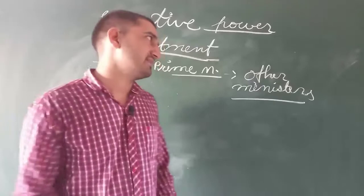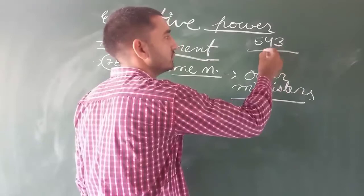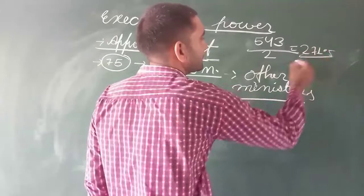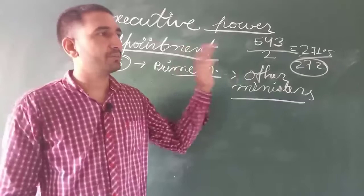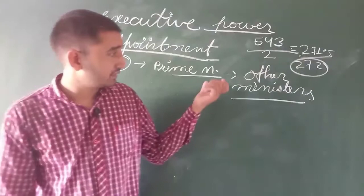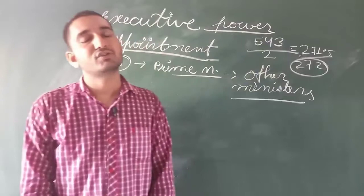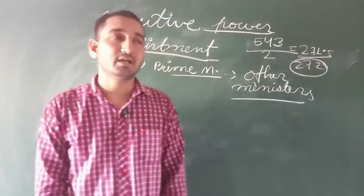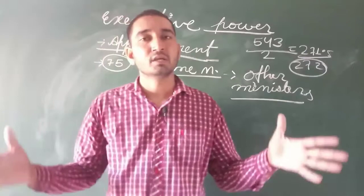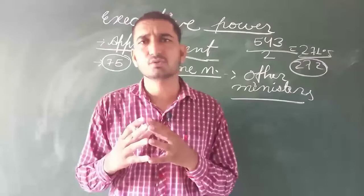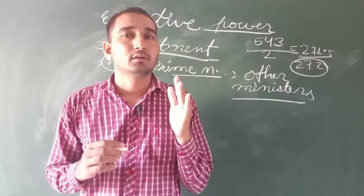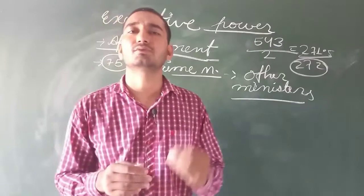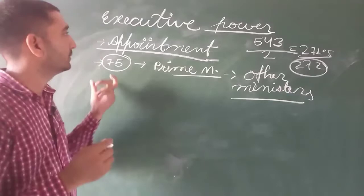In Lok Sabha, the total elected members are 543. Dividing by 2 gives 271.5, so approximately 272 seats. Whichever party scores 272 or more seats, the leader of that party is appointed as Prime Minister by the President. But in exceptional situations, the President can use his discretion for the appointment of Prime Minister - for example, when no party gets a clear majority and different parties form a coalition. In that situation, the President can invite any coalition leader and give them a limited time to prove their majority.